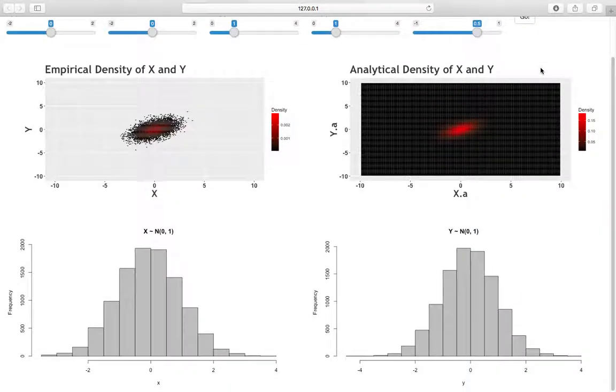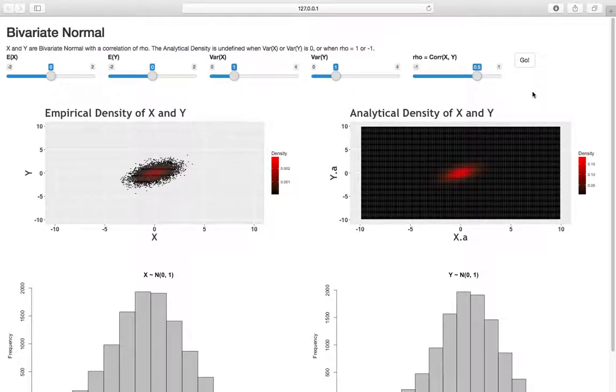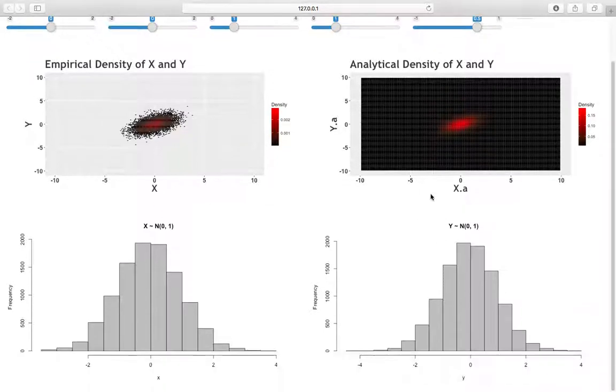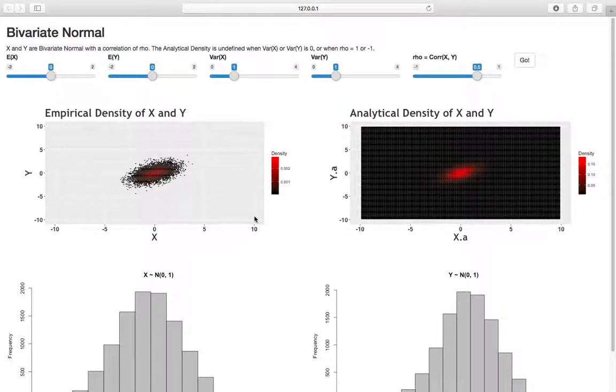Let's go ahead and hit go and see what this looks like. It takes a second because the plot is a little complicated. Notice that just by the function of how the plots are laid out, the plots are rectangular. This x-axis is far longer than the y-axis. Don't necessarily get tripped up by the fact that the y-axis is shorter in this plot. Here's the empirical density of X and Y, and here's the analytical density. And below we have the two marginal distributions.